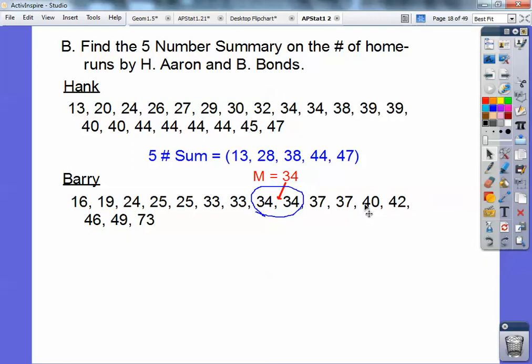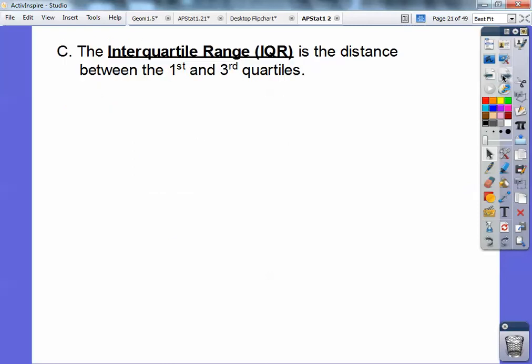So the third quartile is going to be 41. So the five number summary system for Barry Bonds is that right there.